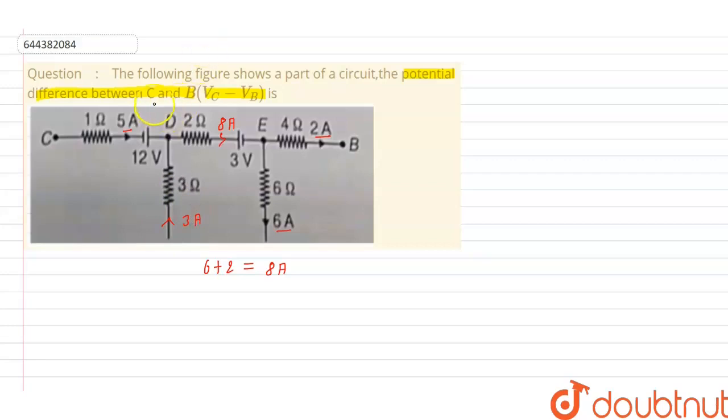And now for the potential difference between C and B, applying Kirchhoff's voltage law we get Vc minus 1 into 5 ampere plus 12 minus 2 into 8 ampere minus 3 minus 4 into 2 ampere equal to Vb.